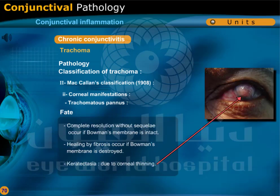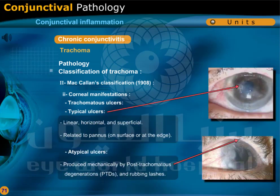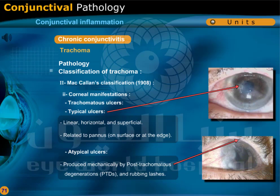Fate of trachomatous pannus: complete resolution without sequelae occurs if Bowman's membrane is intact. Healing by fibrosis occurs if Bowman's membrane is destroyed. Keratectasia may occur due to corneal thinning. Trachomatous ulcers: typical ulcers are linear, horizontal, and superficial, related to pannus on the surface or at the edge. Atypical ulcers are produced mechanically by post-trachomatous degenerations and rubbing lashes.